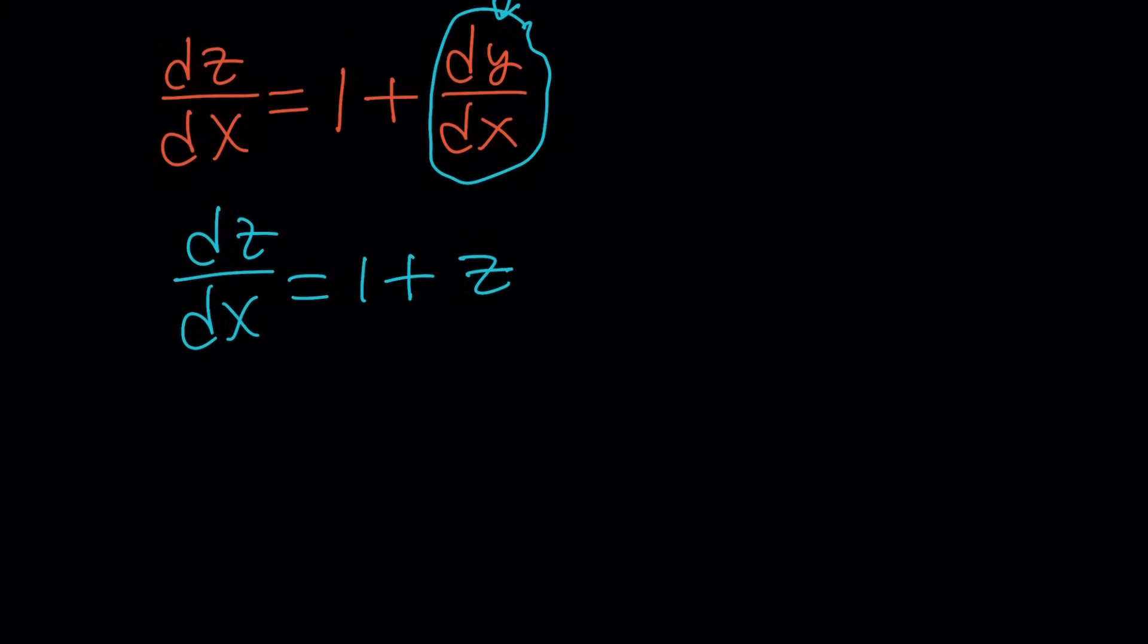Let's go ahead and divide both sides by z plus 1 and multiply by dx. In other words, switch these around and you'll get the following. We separated the variables and we can integrate both sides.